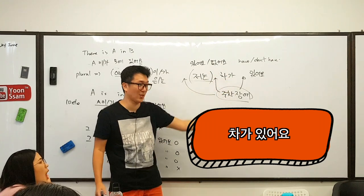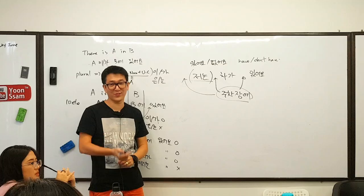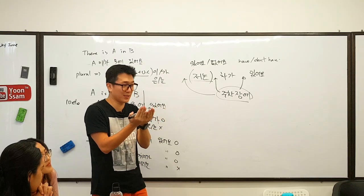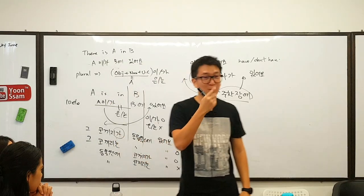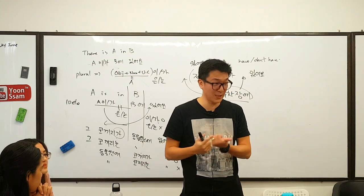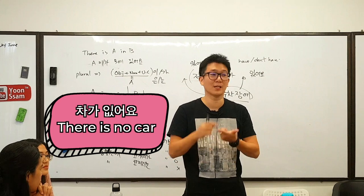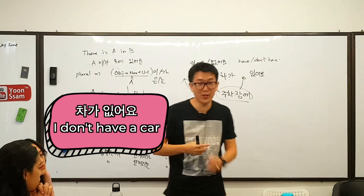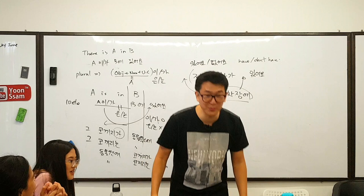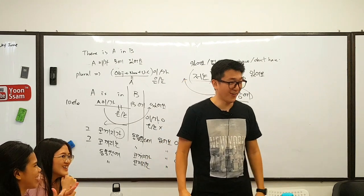Unfortunately, it goes by the conversation. You read a script or somebody says 차가 없어요 — it has to ring a bell. It could mean 'there is no car', it could also mean 'I don't have a car', or it could also mean 'the car is missing'. 차가 없어요 어떻게 해 — 차가 없어요, 내 차가 없어요.